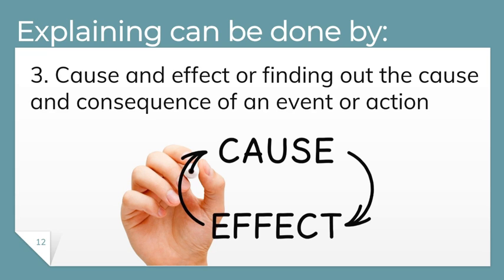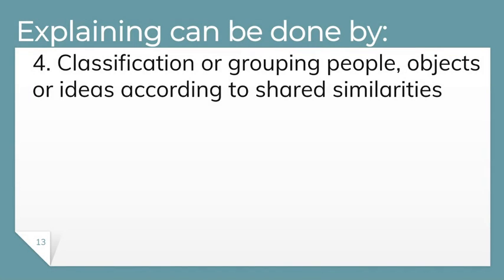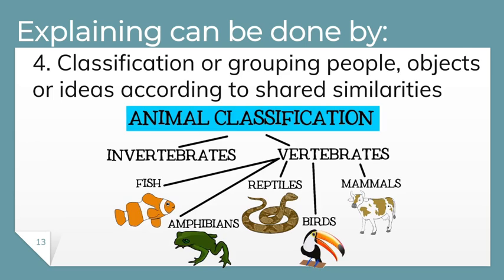Number four is classification — the grouping of people, objects, or ideas according to shared similarities. For example, animal classification is a good illustration. We can actually explain things much more clearly when we apply certain classifications.